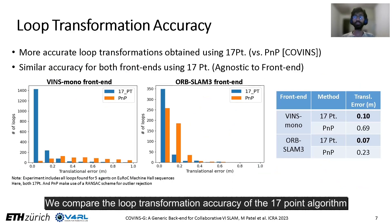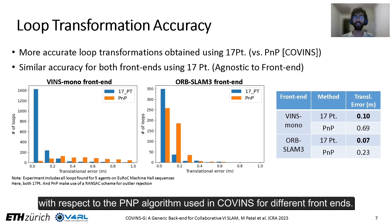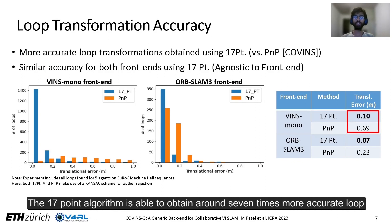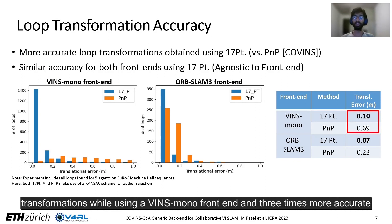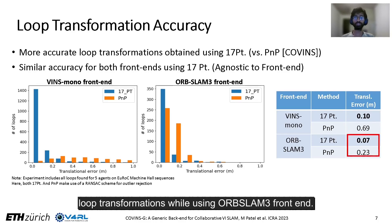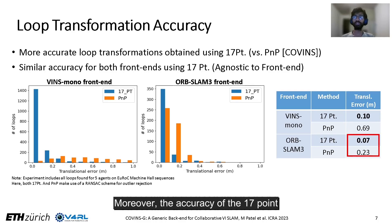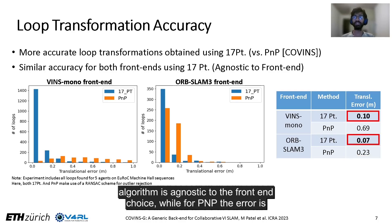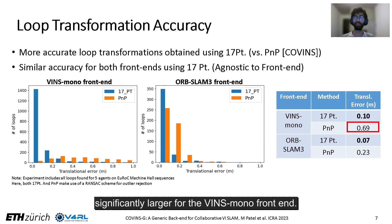We compare the loop transformation accuracy of the 17-point algorithm with respect to the PNP algorithm used in Covins for different frontends. The 17-point algorithm is able to obtain around 7 times more accurate loop transformations while using a VINS-Mono frontend, and 3 times more accurate loop transformations while using ORB-SLAM 3 frontend. Moreover, the accuracy of the 17-point algorithm is agnostic to the frontend choice, while for PNP the error is significantly larger for the VINS-Mono frontend.